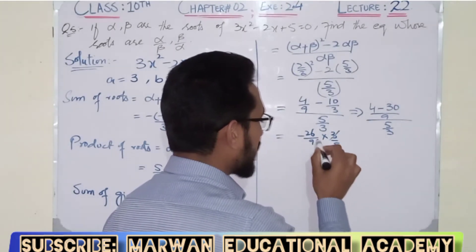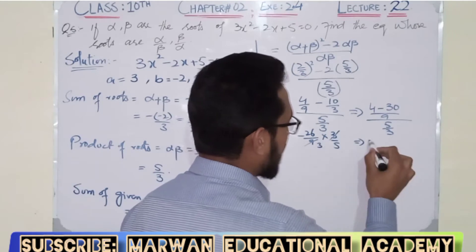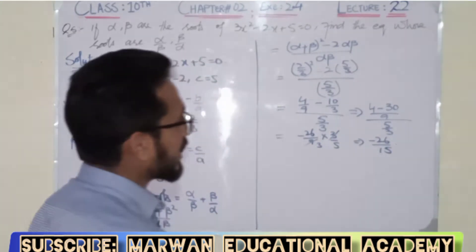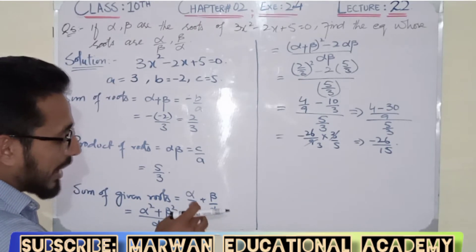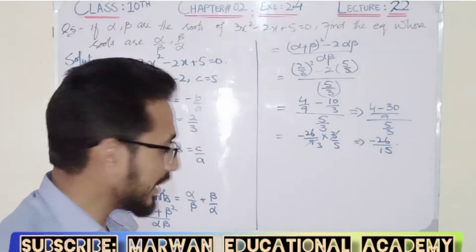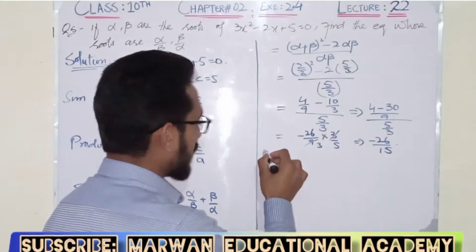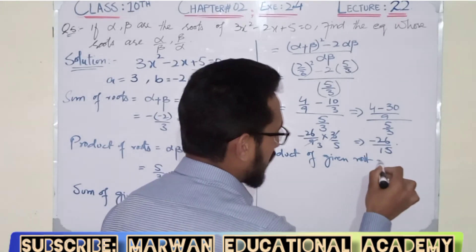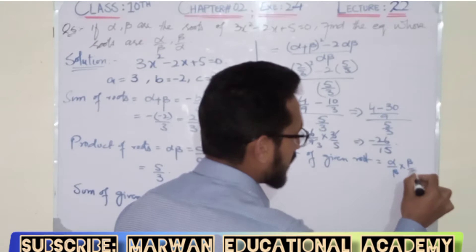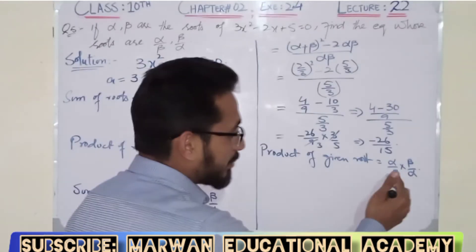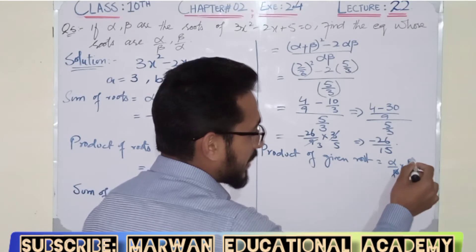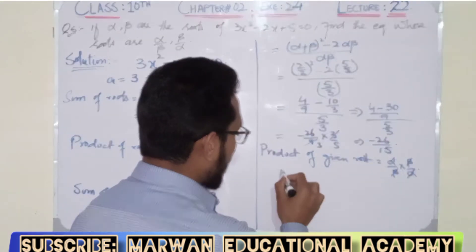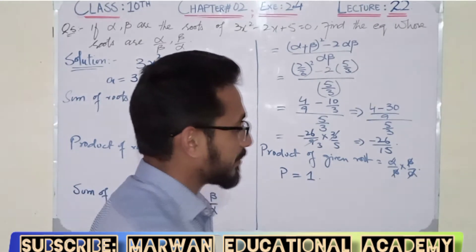After calculation, the sum of given roots comes out to minus 26 divided by 15. Now taking the product of given roots: alpha over beta multiplied by beta over alpha. The beta and alpha cancel out, so product of given roots is equal to 1.